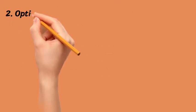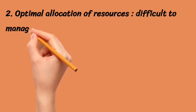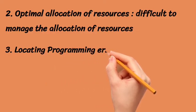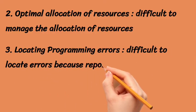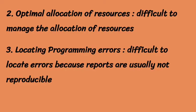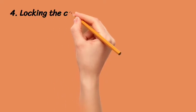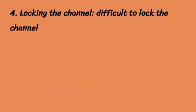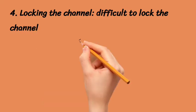Second, if we talk about allocation of resources, it is very difficult to manage because many processes are executing at the same time. Third, we have programming errors — we cannot locate our errors easily because the results are not reproducible. Also, locking the channel in concurrency is a very difficult process.